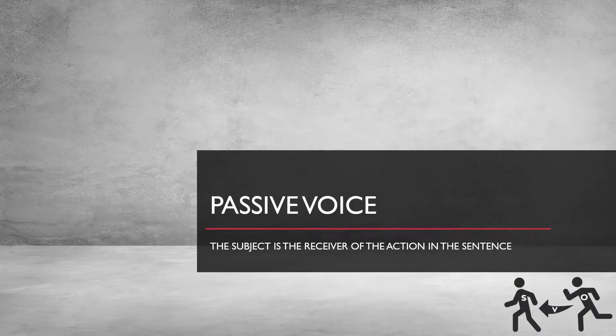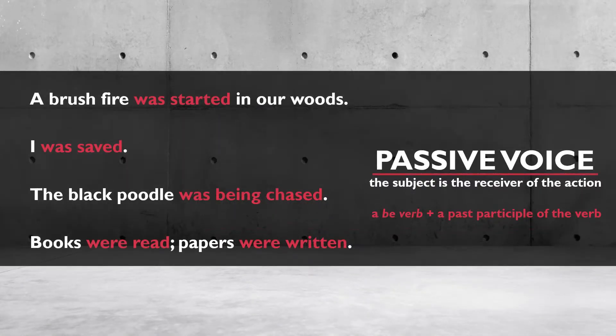Remember, passive voice is when the subject is the receiver of the action in the sentence. Sentences are said to be in passive voice when the subject is the receiver of the action. Consider these examples: a brush fire was started in our woods; I was saved; the black poodle was being chased; books were read; papers were written. What are the actions in these sentences? The verbs: was started, was saved, was being chased, were read, and were written.